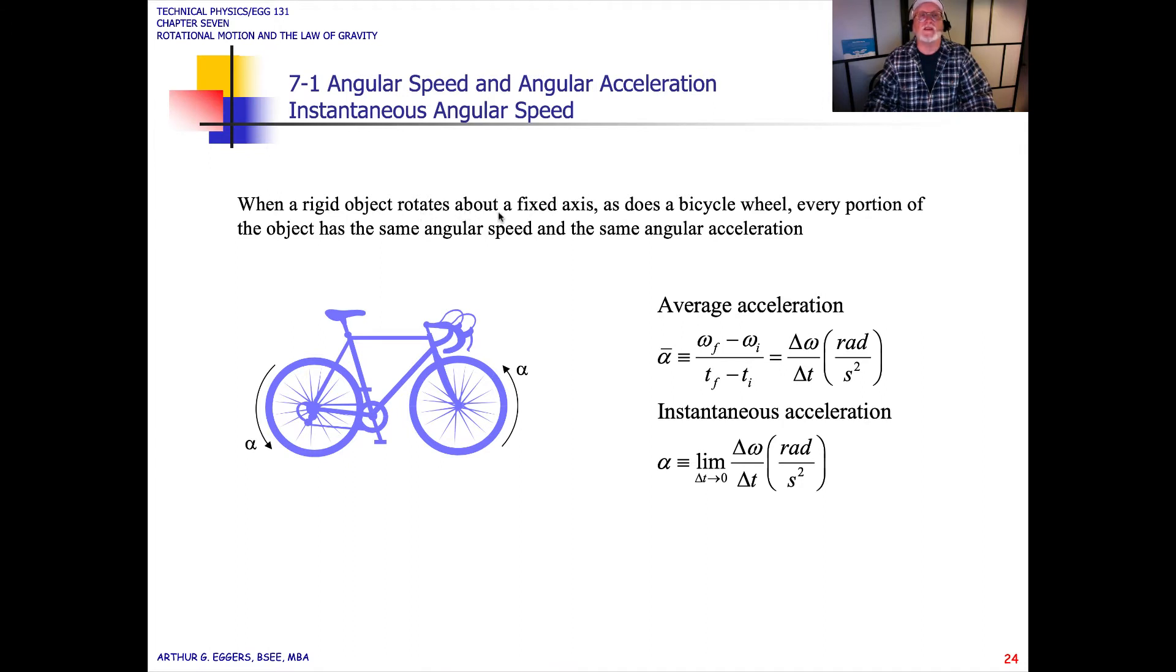When a rigid object rotates about a fixed axis, as does the bicycle wheel, every portion of the object has the same angular velocity and the same angular acceleration. The angular acceleration we denote with lowercase alpha. The average acceleration is defined the same way we did the linear as the change in the velocity, final minus initial, with respect to time. We have units radians per second squared. The same instantaneous acceleration representation is defined as the limit as the time approaches 0.